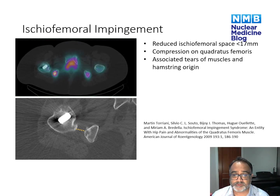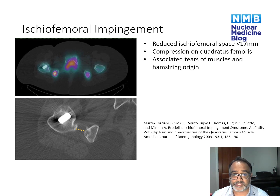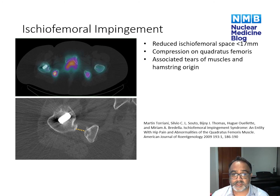Another source of impingement is ischiofemoral impingement, due to a reduced space between the ischium and the lesser trochanter of the femur, which can result in compression of the quadratus femoris muscle. On MRI, you may see tears of the hamstring origin muscles or edema within the quadratus space. On SPECT CT, you may see focal increased uptake on the lateral aspect of the ischial tuberosity. You can measure the ischiofemoral space; if this is less than 17 millimeters, it suggests possible impingement.